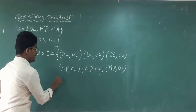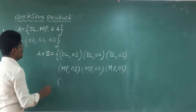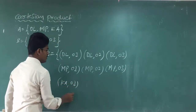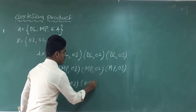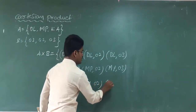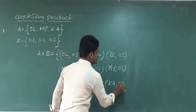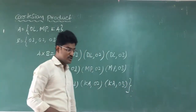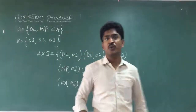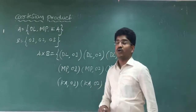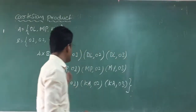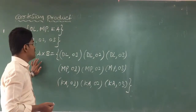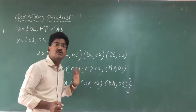Next we write (ka, 1), (ka, 2), (ka, 3). This was your homework problem. Please verify and check all the ordered pairs.